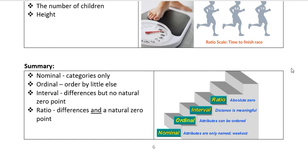And finally, the summary: nominal is just categories only. Ordinal has order but little else. Interval has differences but no zero point. And ratio has differences and a natural zero point.